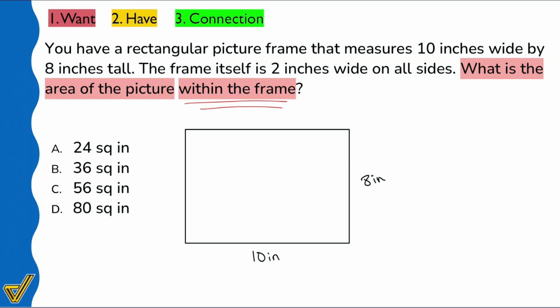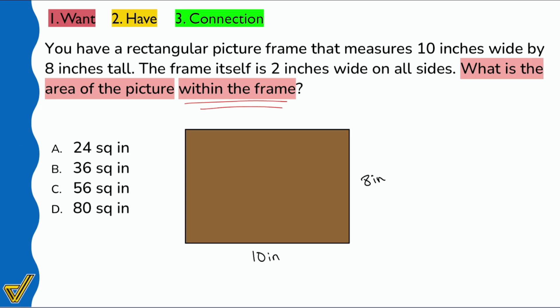And then from there, we read the frame itself is 2 inches wide on all sides. What's the area of the picture inside or within the frame. So we have to draw that out. Allow me to go ahead and help you visualize this even more by changing the color inside. I'll make the frame brown. And then allow me to draw the picture inside of the frame.